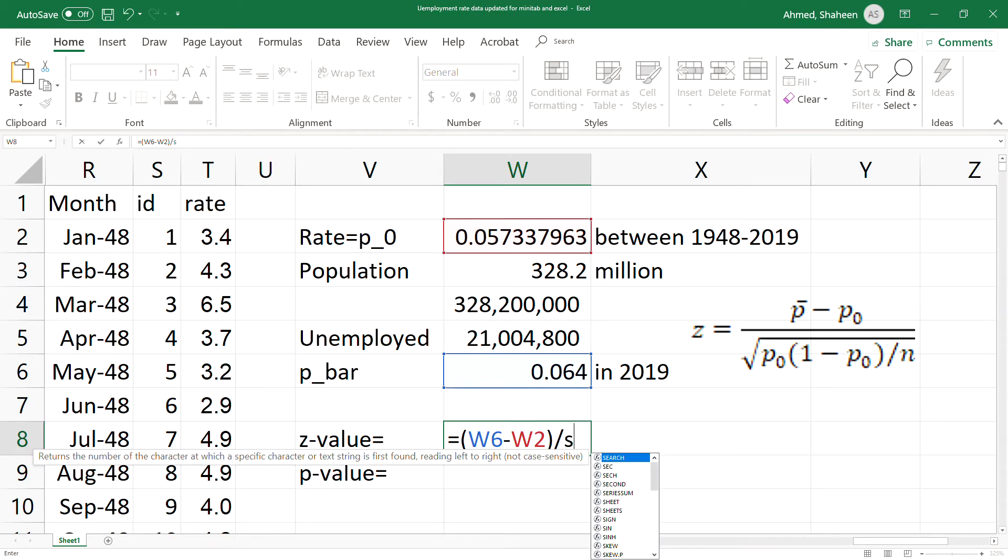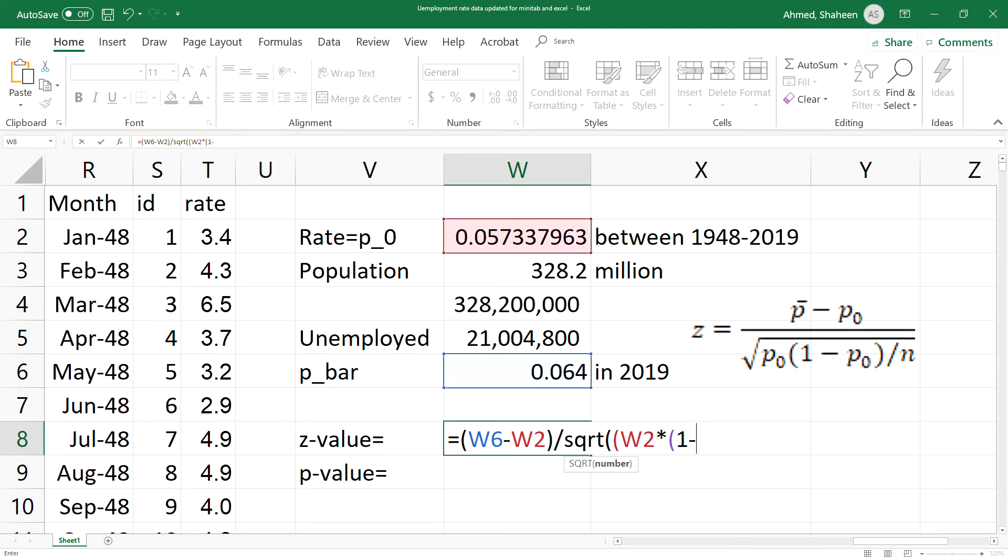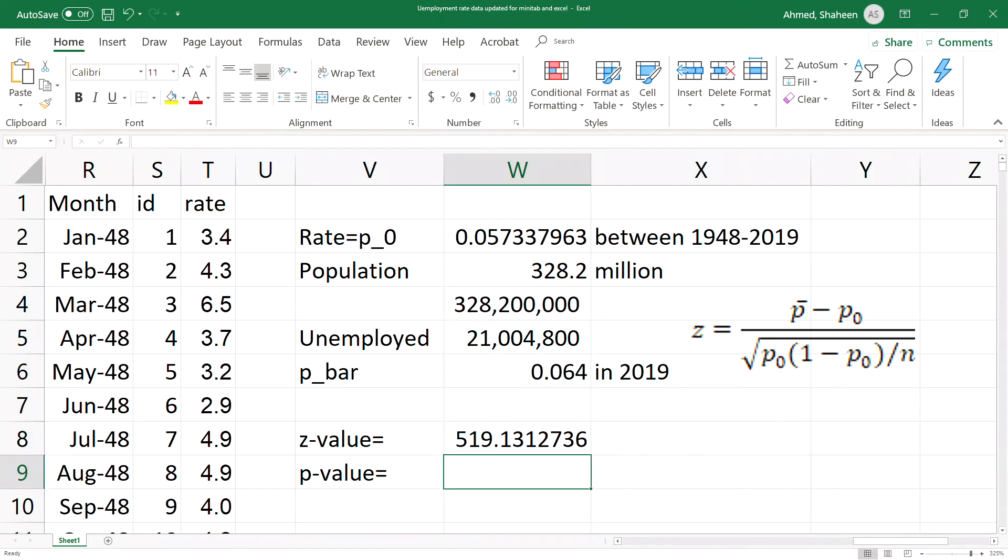So let me do square root. I'm going to start with one more parenthesis: p-zero times one minus p-zero, close the parentheses, divide by the total number of people surveyed. I just did the entire United States population and then close the parentheses. That's the z-value.